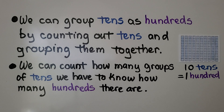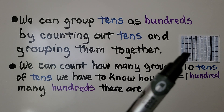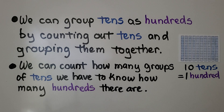We can group tens as hundreds by counting out tens and grouping them together. We can count how many groups of tens we have to know how many hundreds there are. Here we have 10 tens — it's equal to 100.